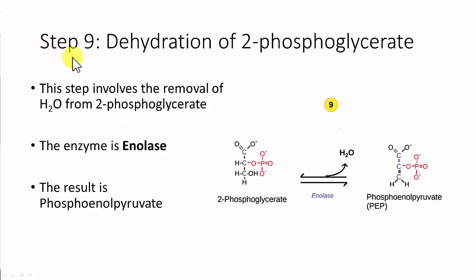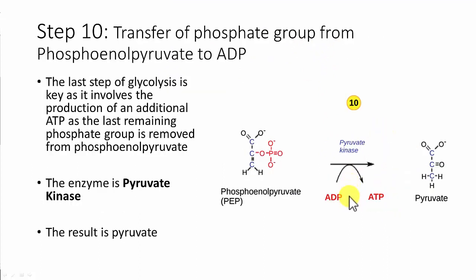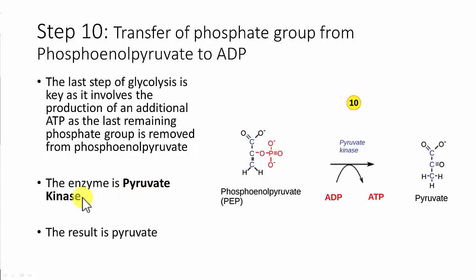Step nine involves a dehydration — we remove water from the molecule, changing its chemistry. We convert 2-phosphoglycerate to a molecule called phosphoenolpyruvate. The last step — step ten — involves the final phosphorylation: we take the remaining phosphate group and transfer it to ADP to form ATP. This gives us the final product of glycolysis, called pyruvate — sometimes referred to as pyruvic acid. The enzyme here is pyruvate kinase, and this yields our final ATP of the pathway.